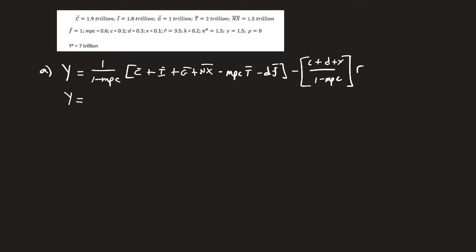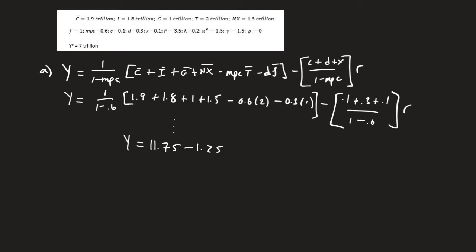So we just want to plug in the numbers. 1 over 1 minus 0.6 times 1.9 plus 1.8 plus 1 plus 1.5 minus 0.6 times 2 minus 0.3 times 1 minus 0.1 plus 0.3 plus 0.1 all over 1 minus 0.6 times R. We've done this before, so I'm not going to go through the algebra again. But it ends up being Y equals 11.75 minus 1.25 times R.